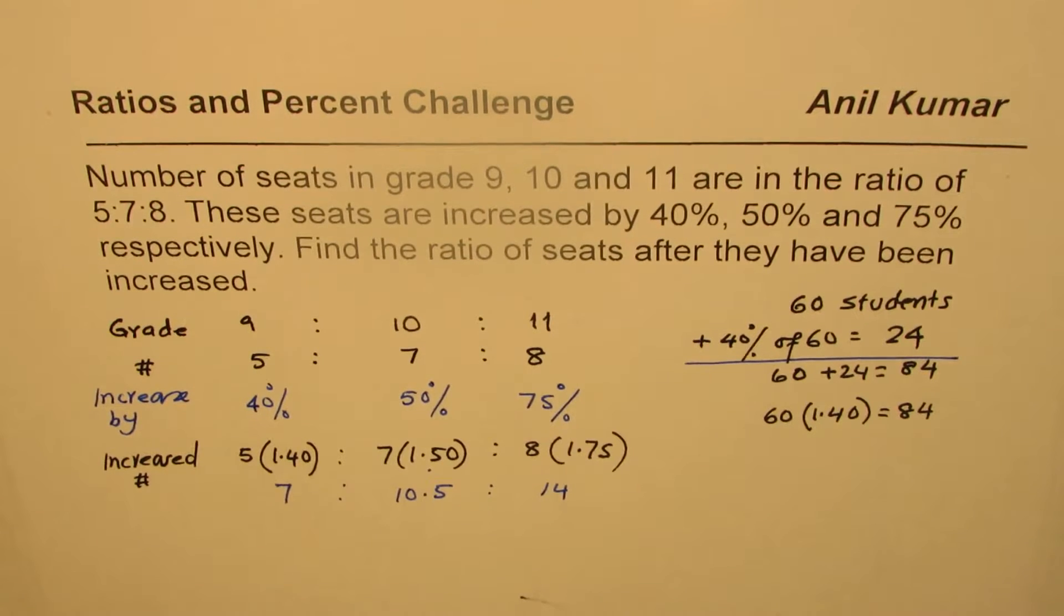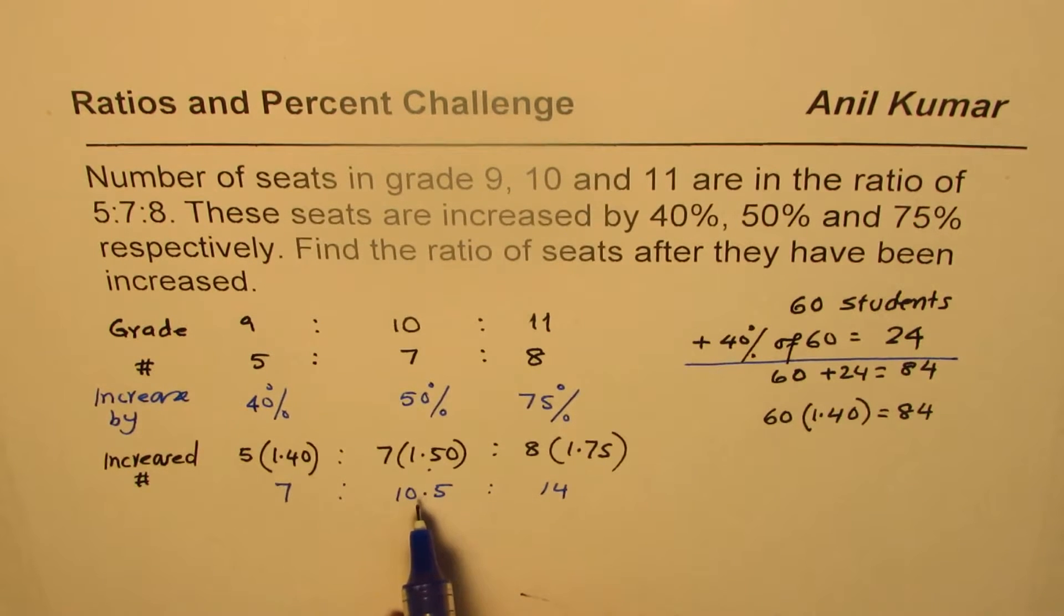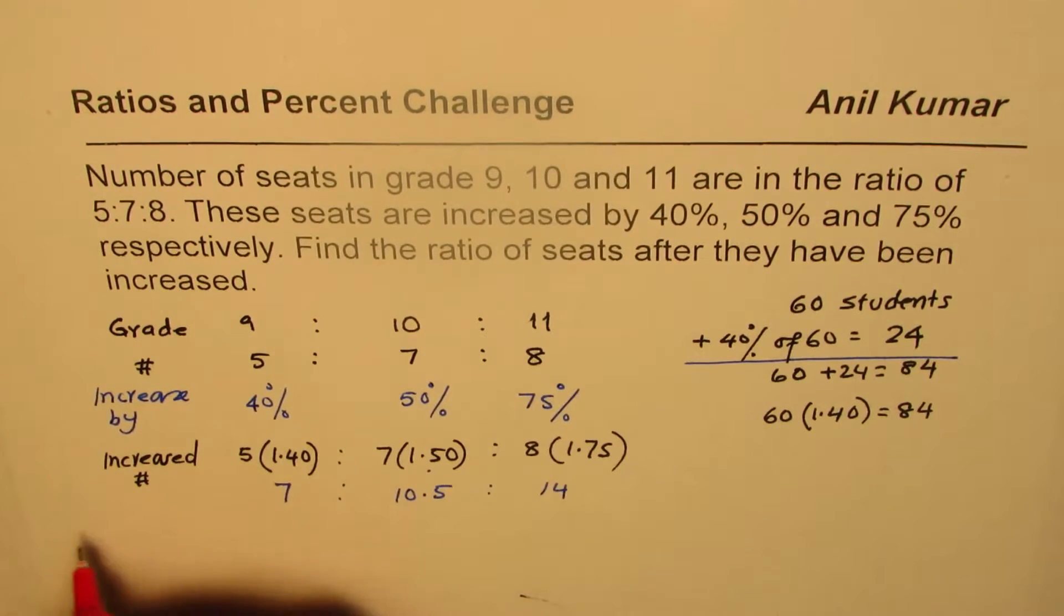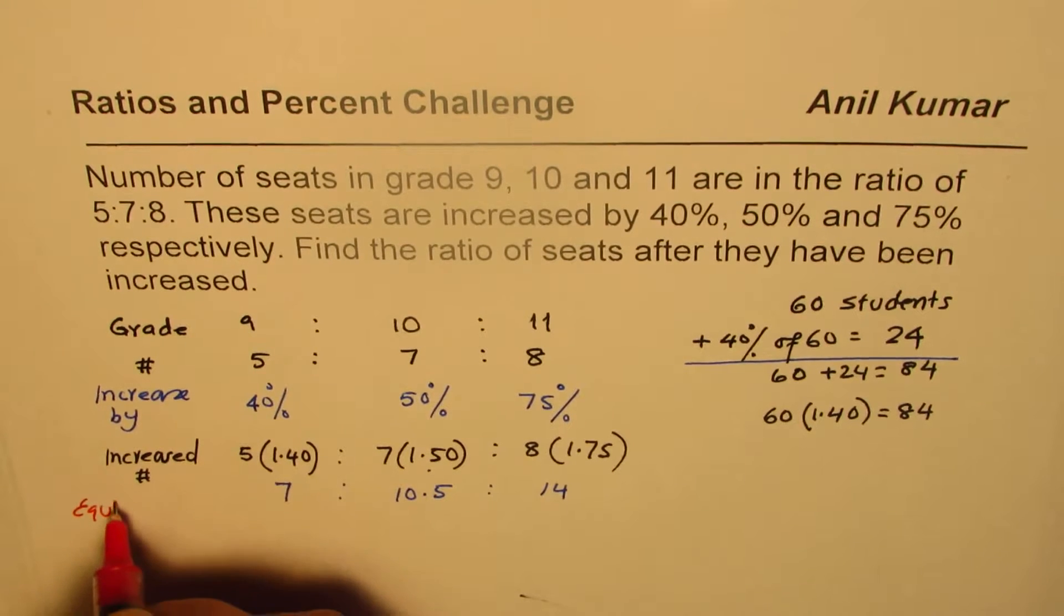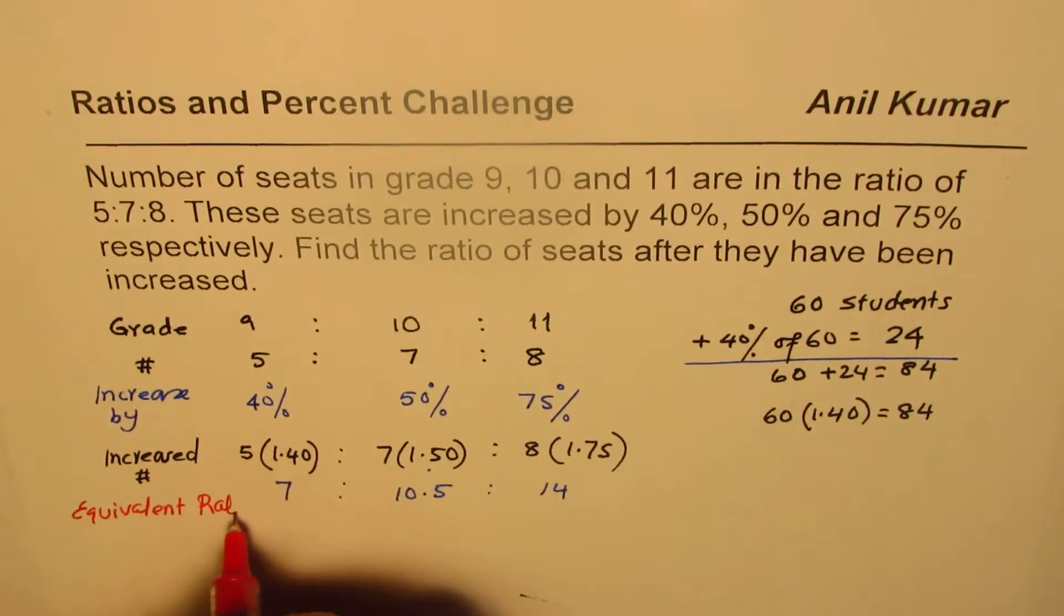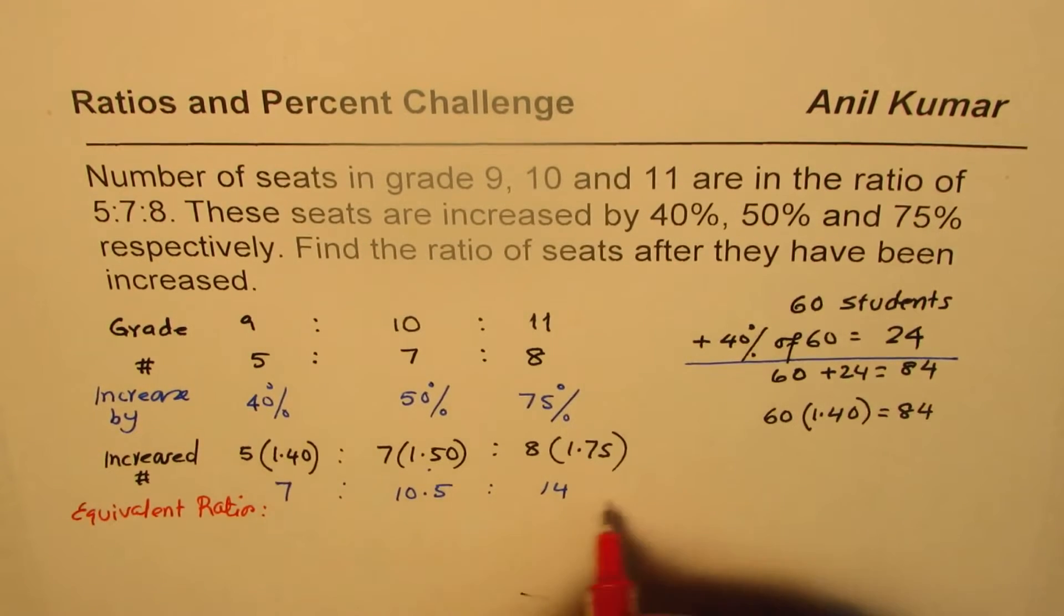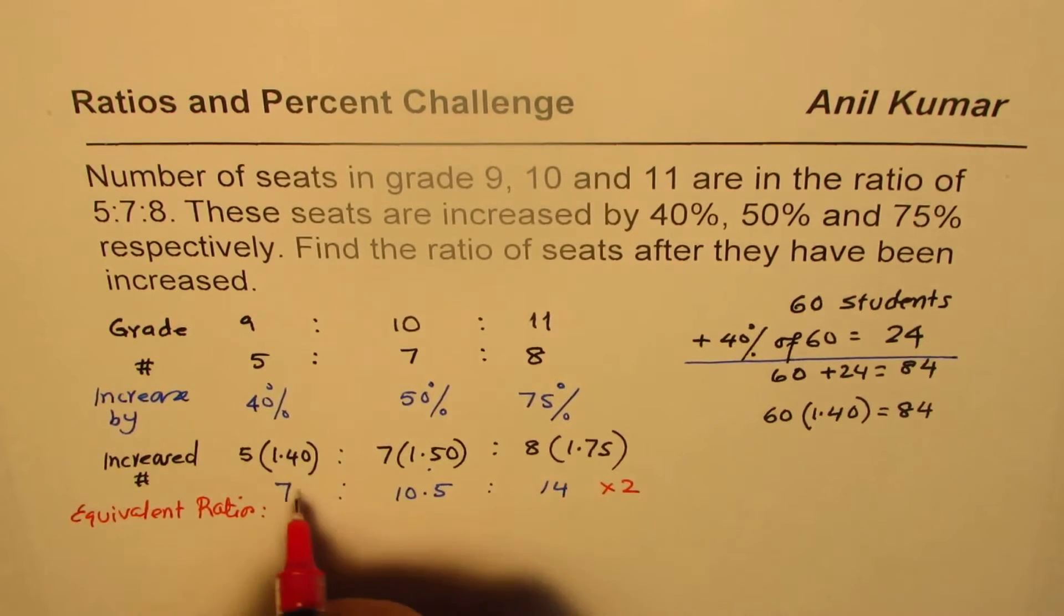Now, whenever we talk about ratios, we should convert them to whole numbers. So what we will do here is, this is equivalent ratio. We will write equivalent ratio. We can find equivalent ratio here by times it by 2. Every term here. Every term.